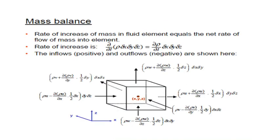We are going to solve for mass balance. The rate of increase of mass in the fluid element equals the net rate of flow of mass into the element. The rate of increase is given as (∂/∂t)(ρ δx δy δz), which can be written as (∂ρ/∂t) δx δy δz. Positive and negative terms represent inflows and outflows. Expressions are given for each face, and summing up all equations for x, y, z gives the total mass equation.